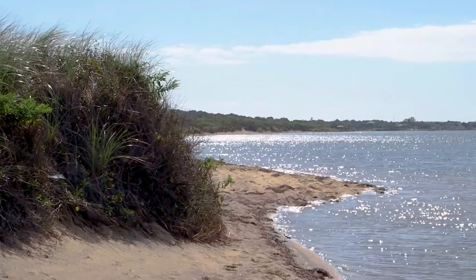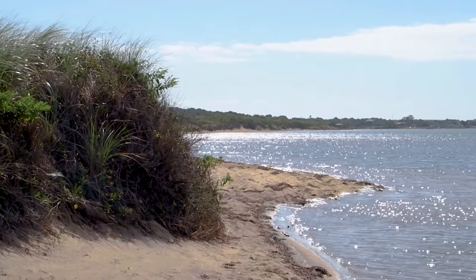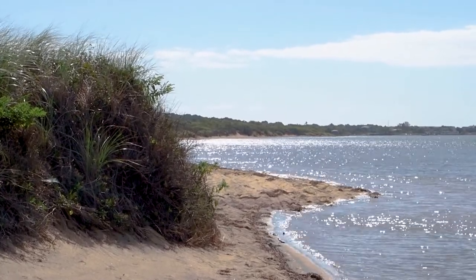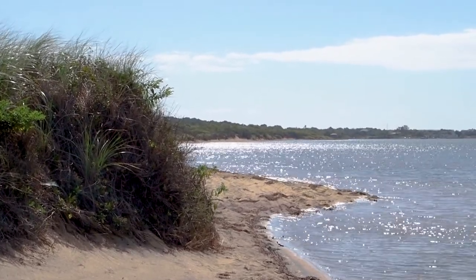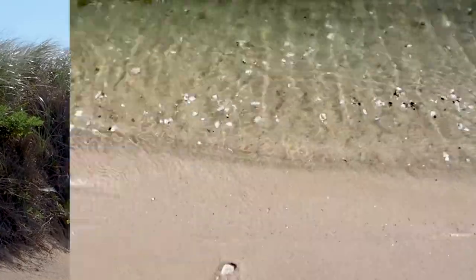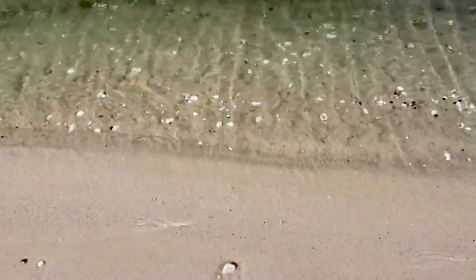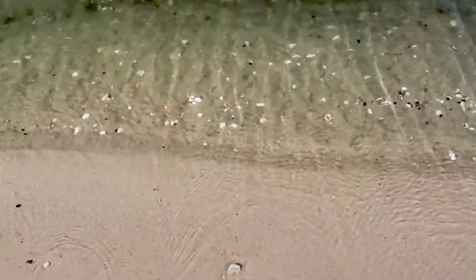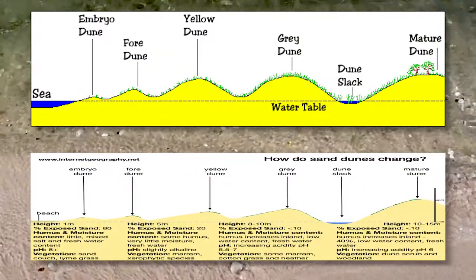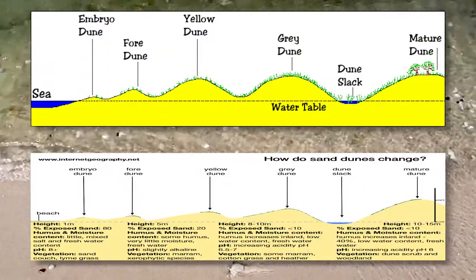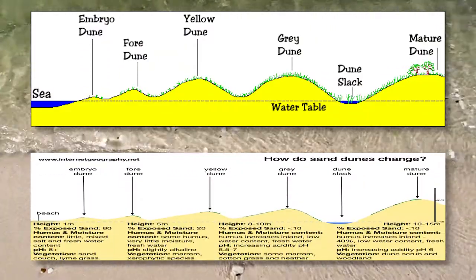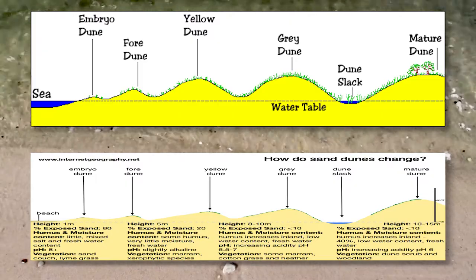So it makes sense that scientists would be interested in where coastal dunes sit relative to the shore when trying to classify them. Floating around the internet are charts like this, labeling the dunes with colors like white, yellow, or gray depending on how far they are from the water.